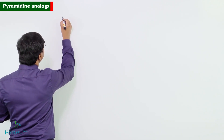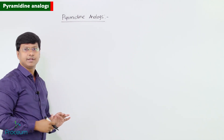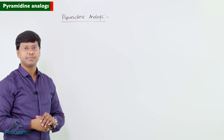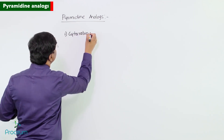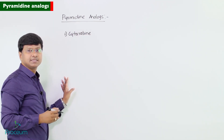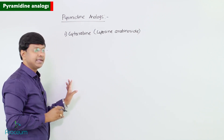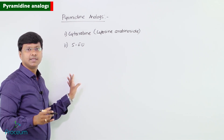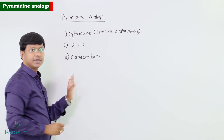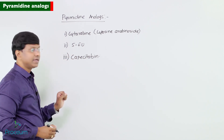Now after having discussed about the Purine Analogues, let me discuss about the Pyrimidine Analogues. Drugs in this group include: number one, Cytarabine, that is cytosine arabinoside; 5-fluorouracil; and Capecitabine.